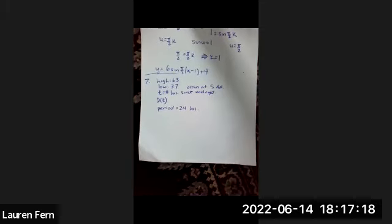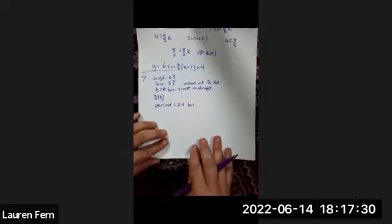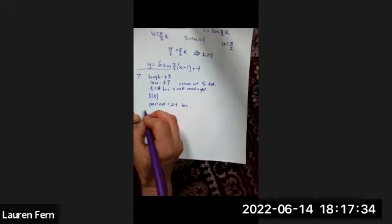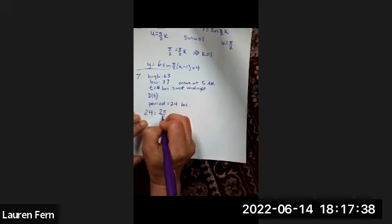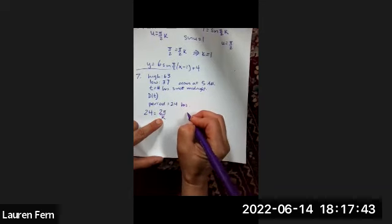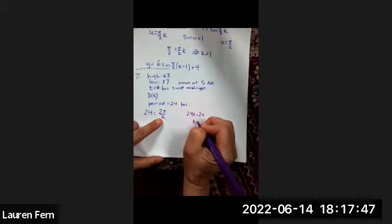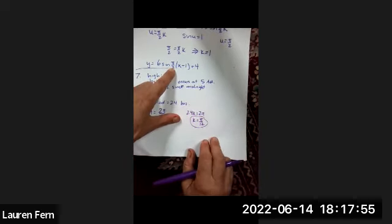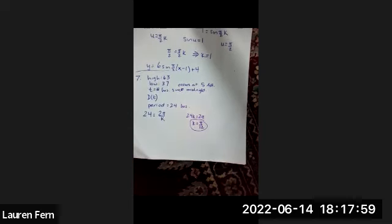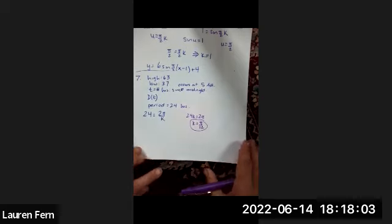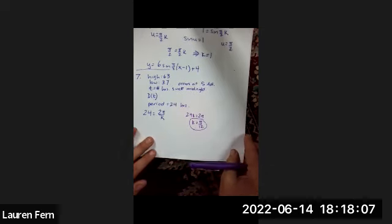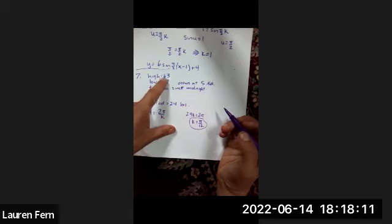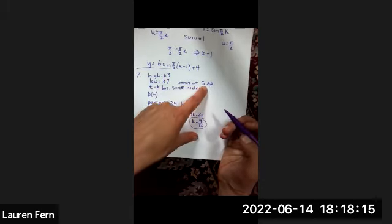Our period is 24, which equals 2π/k, so 24k = 2π, giving k = π/12. We also know the low is 37 and occurs at 5 a.m. Since T is hours since midnight, when T = 5, temperature D = 37. And since the period is 24 hours, T = 29 also corresponds to D = 37.